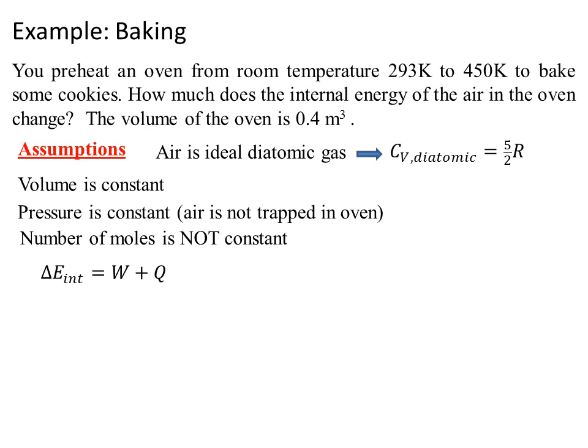So delta E internal is equal to W plus Q, and for constant V, W is equal to zero. So delta E_int is equal to Q equals C_v times delta of n T. Notice the change is for both n and T. So the temperature and the number of moles change in this process.